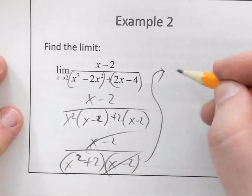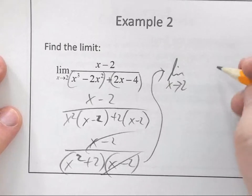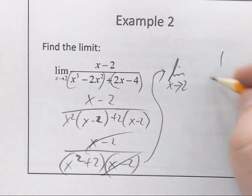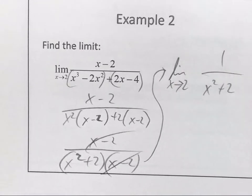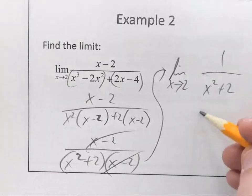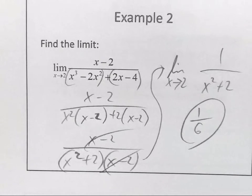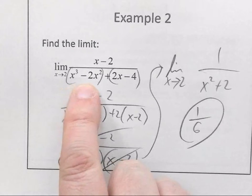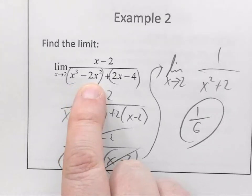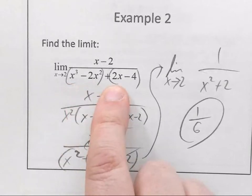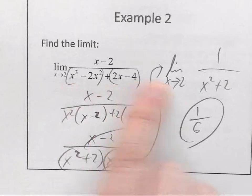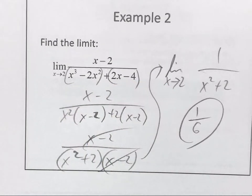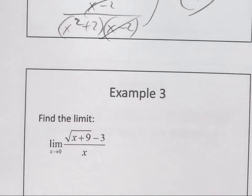Then what? Cancel out the x minus 2. So I still have the limit here going on, as x approaches 2, of 1 over x squared plus 2. Can I plug in 2 now? Yeah, if you plug in 2, what do you get? 1/6. There's your limit. Not too bad? Why can't I just put in 2? 2 to the 3rd is 8, so 8 minus 8 is 0. 2 times 2 minus 4 is 0, plus 0 is 0. Yeah, you couldn't plug it into the original one.